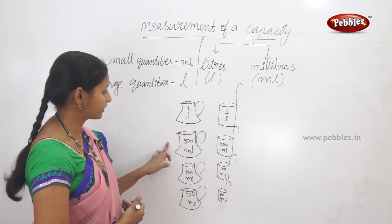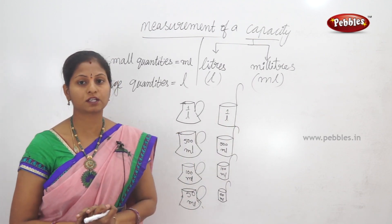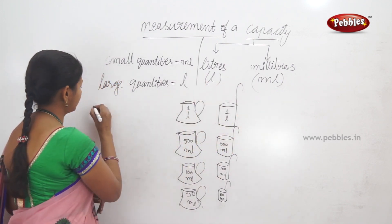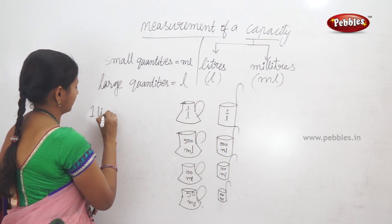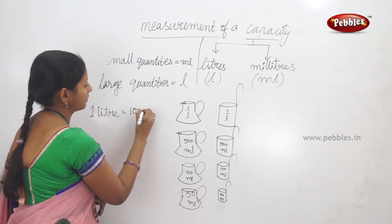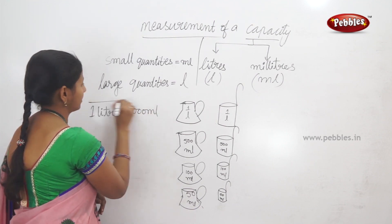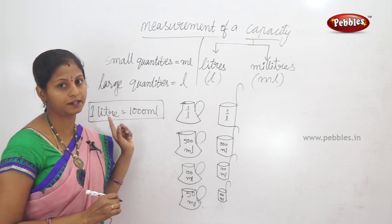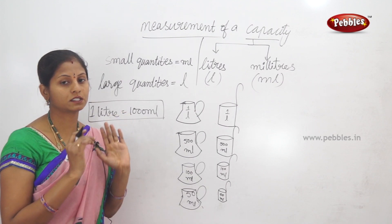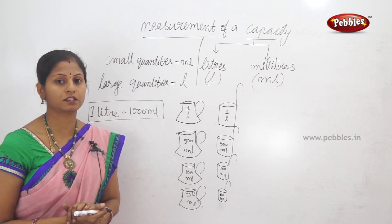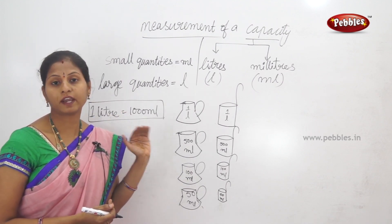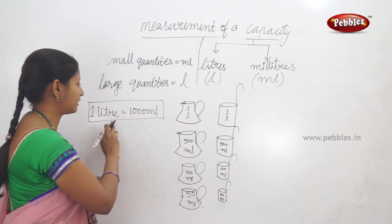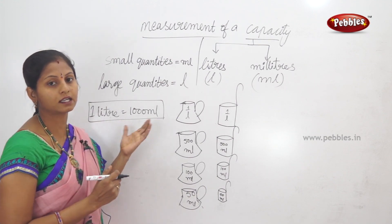So, 1 liter is equal to 1000 ml. 1 liter is equal to 1000 milliliters. One liter equals 1000 milliliters.